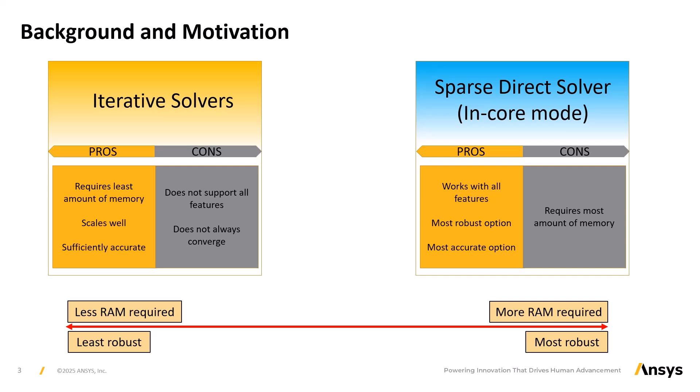For the direct method solvers, their largest benefits are being very robust and always providing a result, and therefore it's the default solver for all types of analyses in the Mechanical APDL product. However, direct solvers use the most amount of memory relative to other solvers. For the iterative solvers, their biggest advantage is using a lot less memory than the direct solvers, but their biggest disadvantage is simply that they do not always converge, and so they cannot be used to support all analysis types in the Mechanical APDL product.